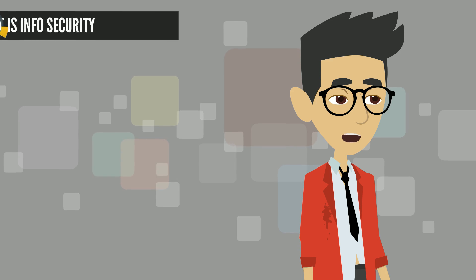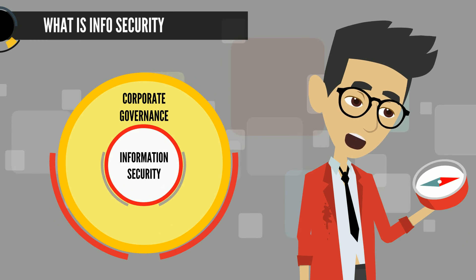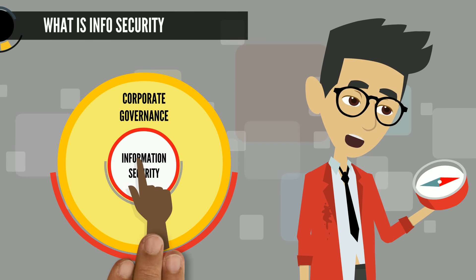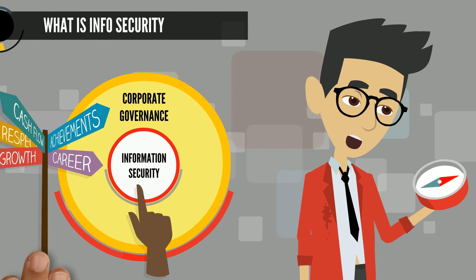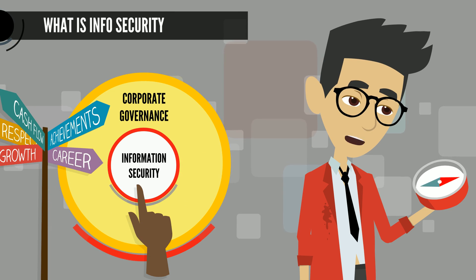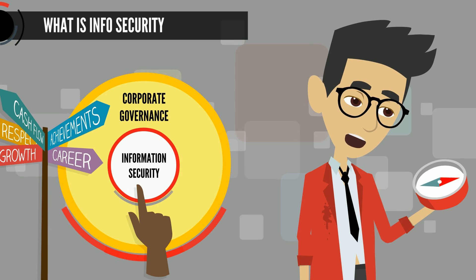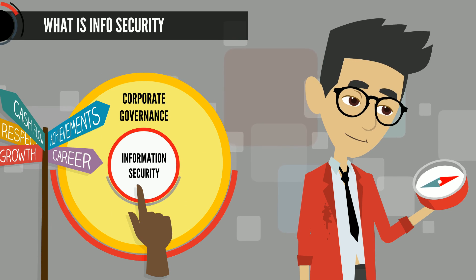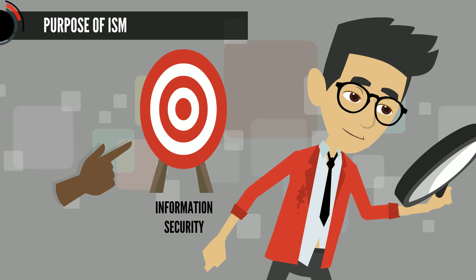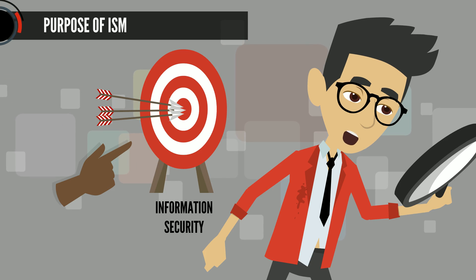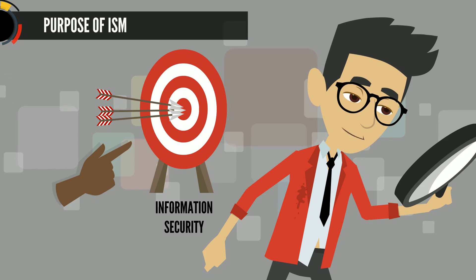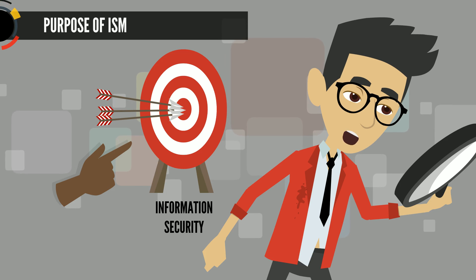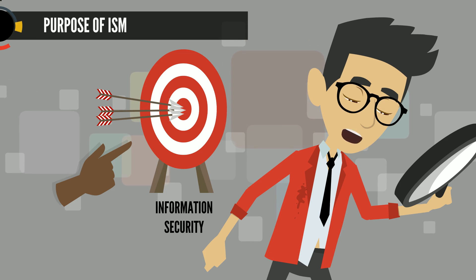Information Security Management is a management activity within the corporate governance framework, which provides the strategic direction for security activities and ensures objectives are achieved. The purpose of ISM is to provide a focus for all aspects of IT security and manage all IT security activities.